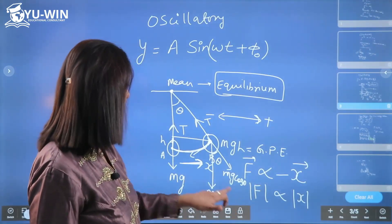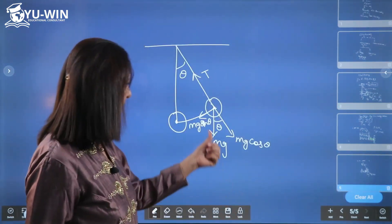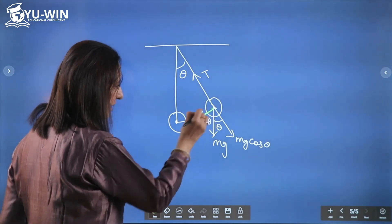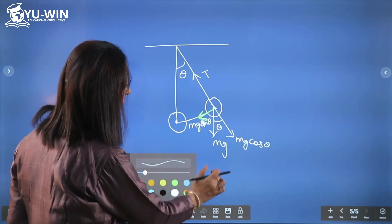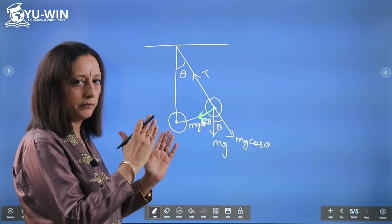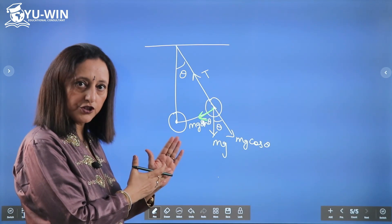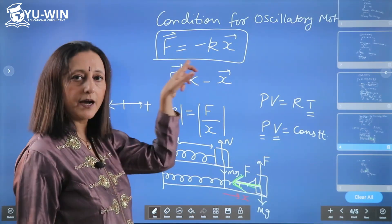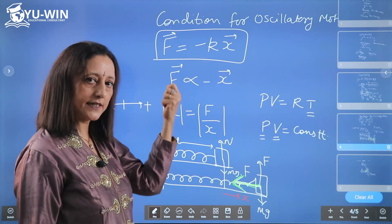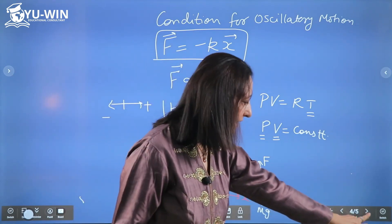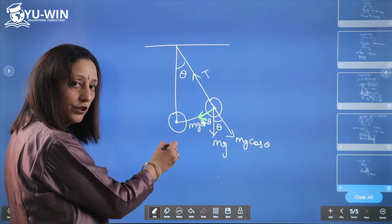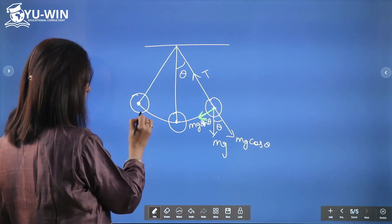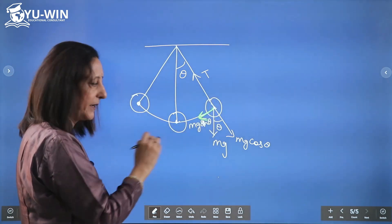For the pendulum, the origin of restoring force is the component of weight — mg sin θ provides the necessary restoring force acting towards the mean position. The general approach: any system in equilibrium, when displaced, if there is a force of type −kx, will tend to come back to mean position. Because of inertia of motion, it will not stay at mean position — it goes to the other extreme, restoring force acts again, and this process continues. This is how the pendulum oscillates.